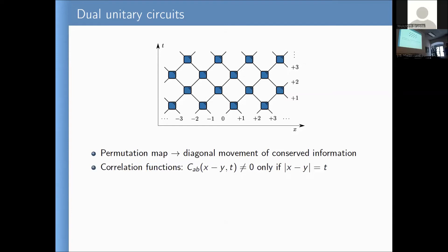The important statement is: if you have the dual unitarity condition, then the connected correlation functions are non-zero only if the positions combined with time are at a light-like separation — meaning the distance between the two positions equals the time difference. So the correlation function is non-zero only if you look at a cell here and then the value of a cell along the light cone. For any other cell outside the light cone, the correlation function is exactly zero. Along the light cones you can show there is an exponential decay with exponents computable from a finite n-by-n matrix.